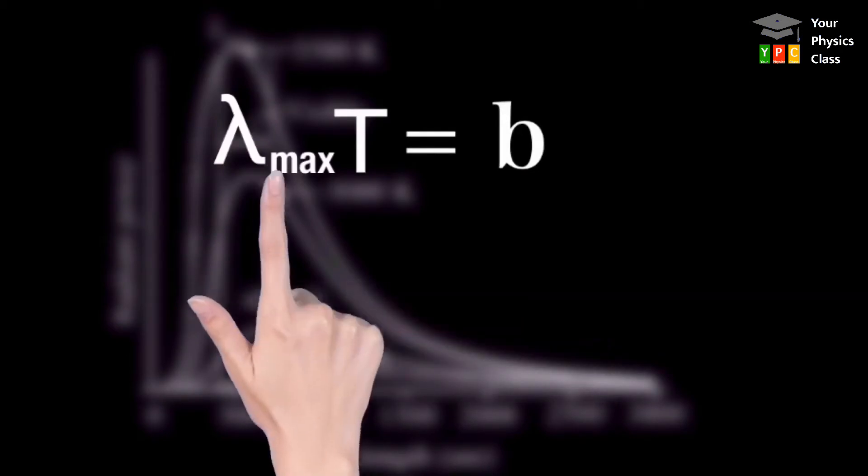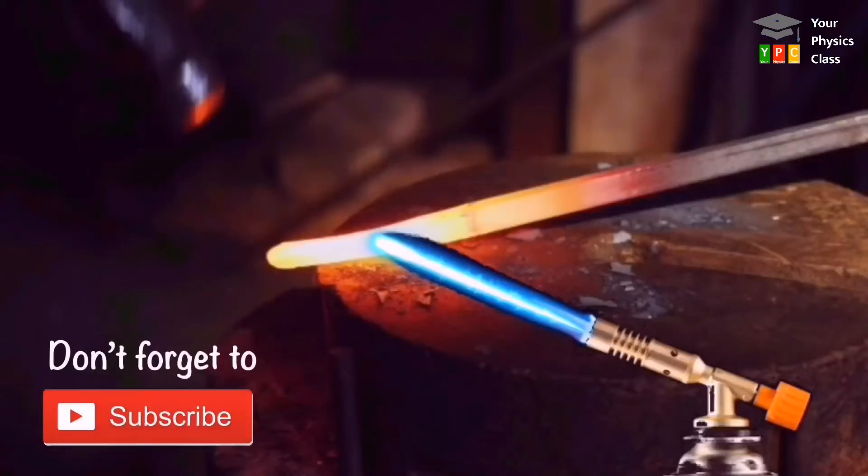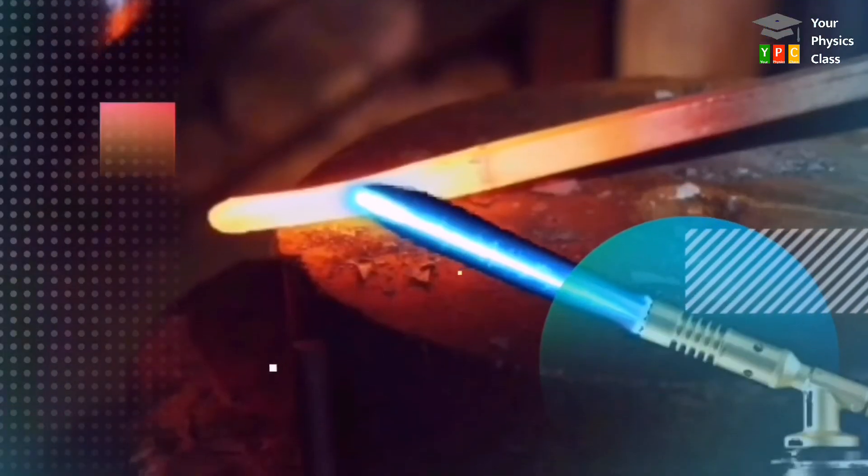Lambda max indicates the wavelength at which a black body dominantly radiates. Let us see this with an example.